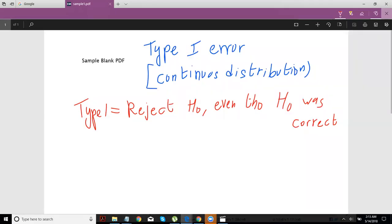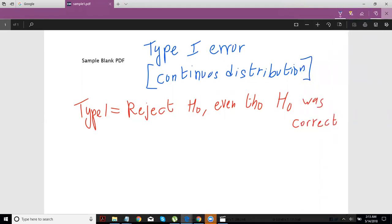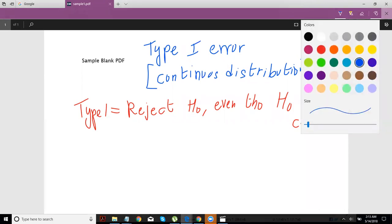Type 1 errors. And this video is going to look at your type 1 error in a continuous distribution, so basically looking at your normal distribution. It is different for a discrete distribution and I have made a separate video for that in the same playlist.